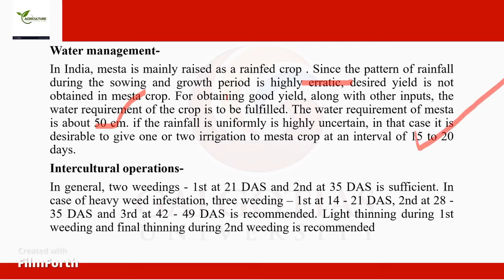For intercultural operations, in general two weedings should be applied. The first one is to be done 21 days after the crop has been sown, and the second one is to be done 35 days after sowing. Light thinning during the first weeding and final thinning during the second weeding is recommended.